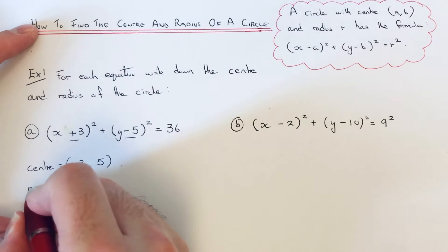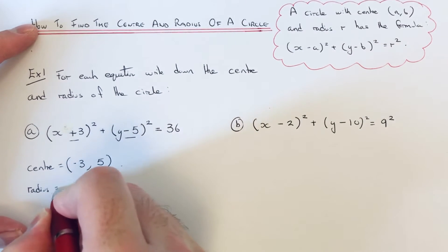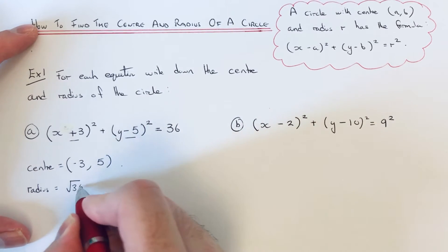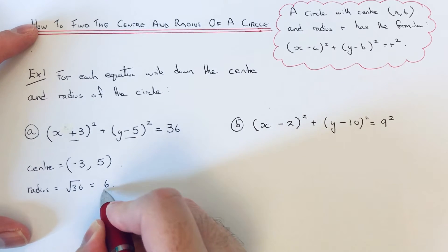And then to get our radius, we need to square root the number at the end of the formula. So the square root of 36 is 6.